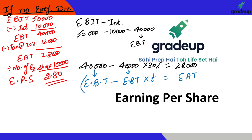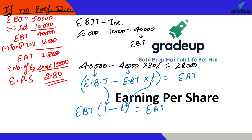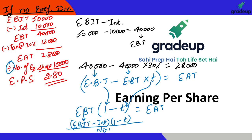From this equation, if I take EBIT as common, I get (1 minus T), so that equals EAT. And I can write EBIT as EBIT minus interest, giving us: (EBIT minus interest) × (1 minus T) = EAT. Ultimately, dividing by the number of equity shares gives us Earnings Per Share (EPS).